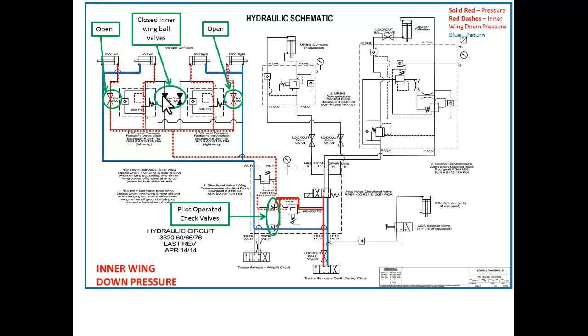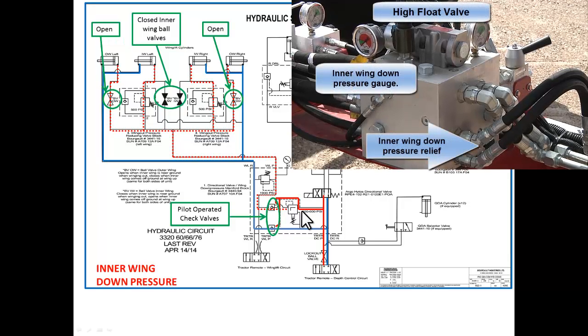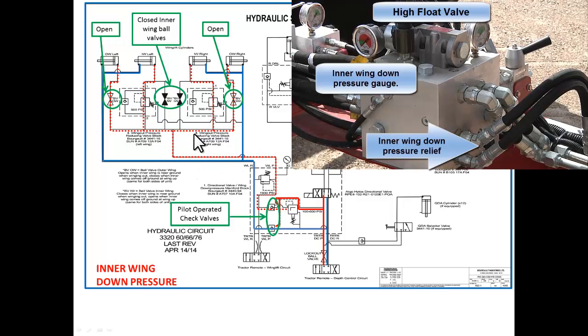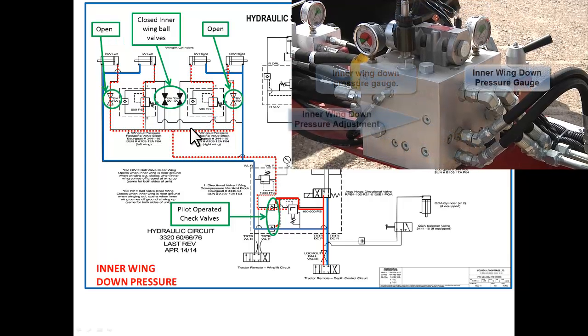Inner wing down pressure. After the drill is winged out and after the tractor wing lift valve is in neutral, oil will be diverted from the opener directional control valve. The pressure side over to inner wing down pressure. This is a function that will allow us to add a little bit of hydraulic pressure to the base end of the inner wing cylinders as shown in the dotted line on your screen.